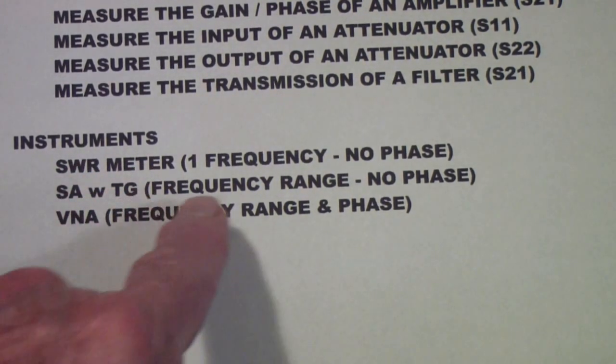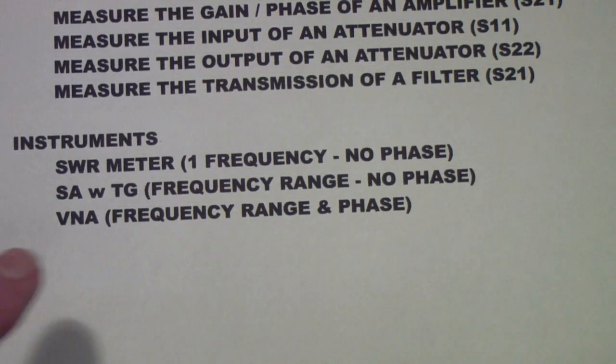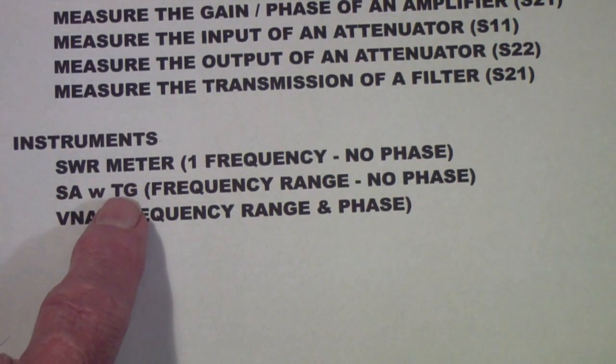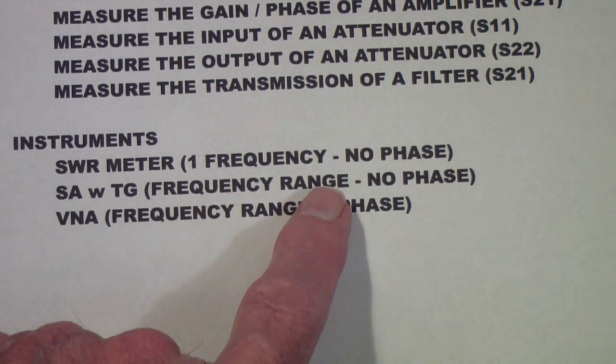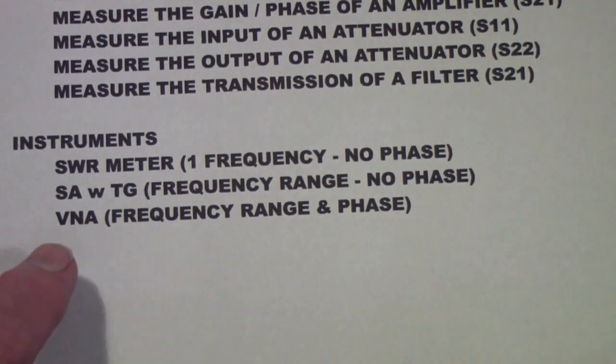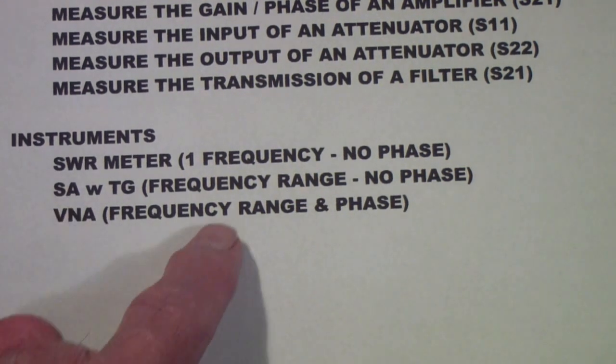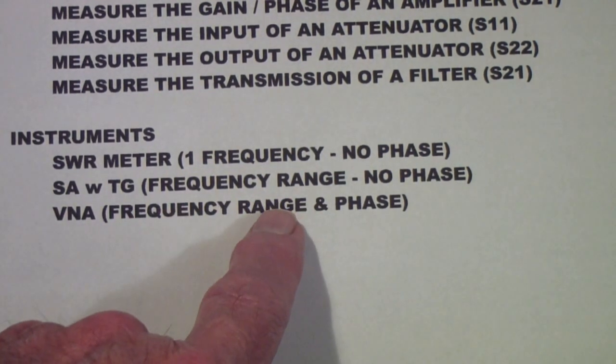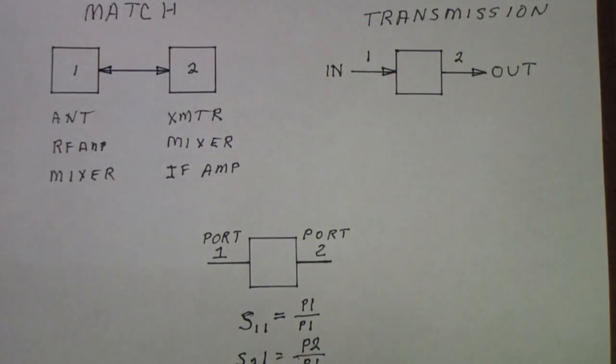What does all that mean? Well, before we go to that, let's just take a look at the options we have. We can use an SWR meter, it only measures in one frequency, it does not give us any phase information. Or we can use something like a spectrum analyzer with a tracking generator, or a so-called network analyzer or scalar network analyzer. And by that scalar, what they mean is no phase. It measures over a frequency range but doesn't give you any phase information. And finally, a vector network analyzer is just like a scalar network analyzer except in addition to giving you measurements over a frequency range, it also gives you the phase over that same frequency range.